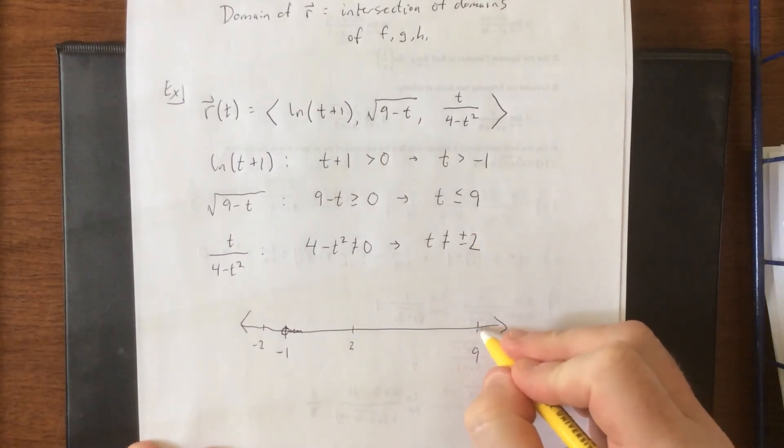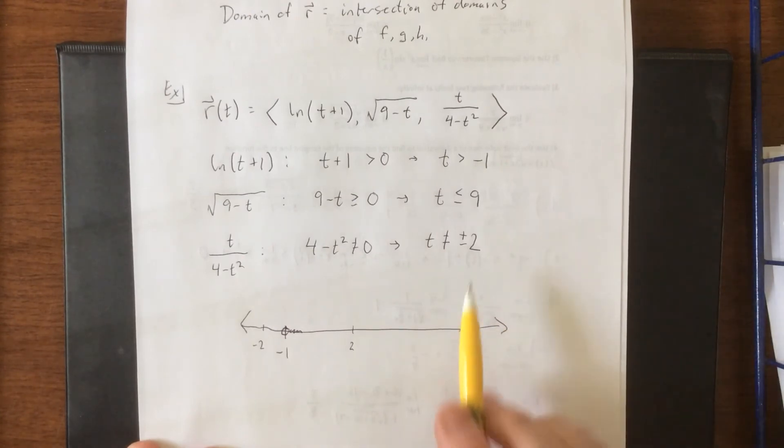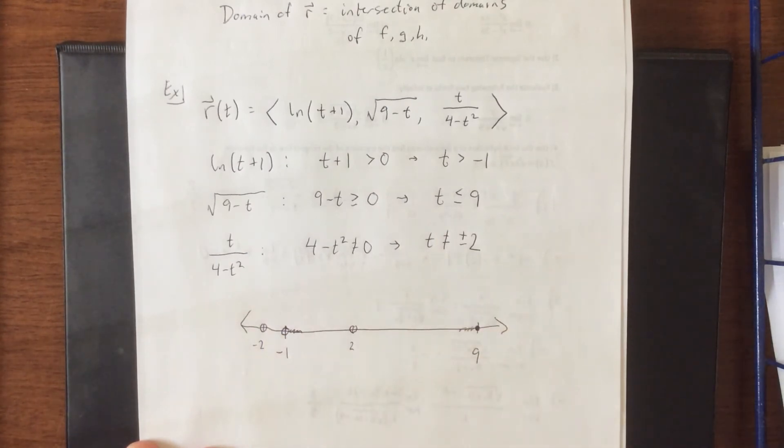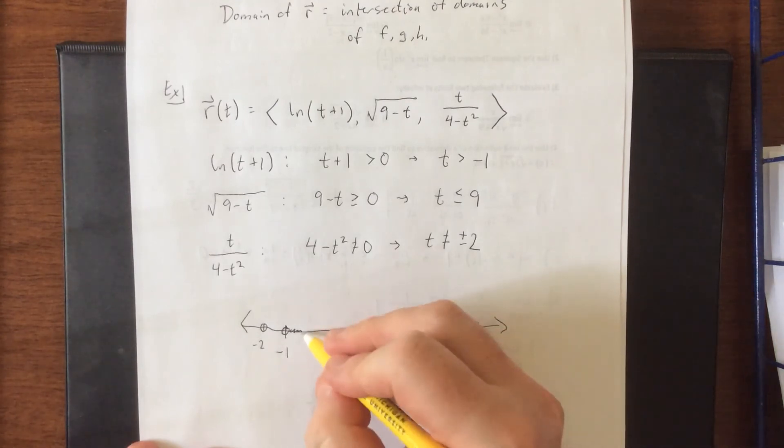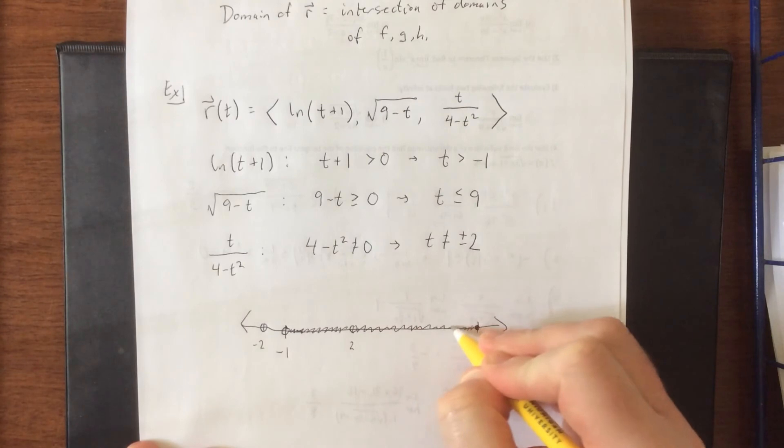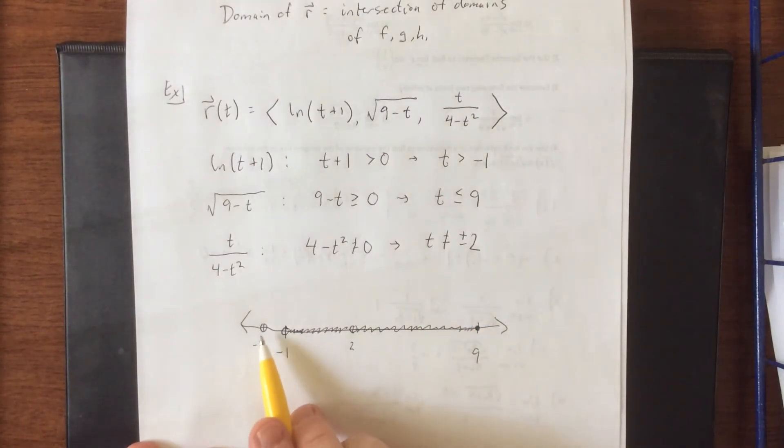Less than or equal to 9 lets us know that we will be closed circle at 9 and shade to the left. And then simply not equal to at plus or minus 2, we can throw open circles there. However, we see when we start to fill this in, negative 2 isn't actually going to have an impact here because the shaded area never actually makes it over to negative 2. So it doesn't matter that it can't be equal to negative 2.